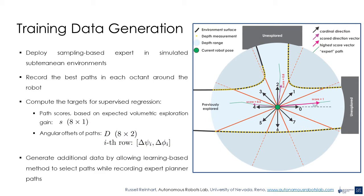Training data were generated by deploying the graph-based expert planner in simulated subterranean environments and recording the best viable paths proposed. It's common in subterranean environments for multiple directions to be feasible and beneficial for exploration. For example, at a tunnel intersection, the robot could proceed forward, backward, or into the branch. The space around the robot is divided into octants, and viable paths within each octant are converted into training labels. For the best path within each octant, a score is calculated based on the path's expected exploration gain. Octants which contain no paths longer than some threshold receive a score of zero. The training labels are the path scores and corresponding orientations in each octant.